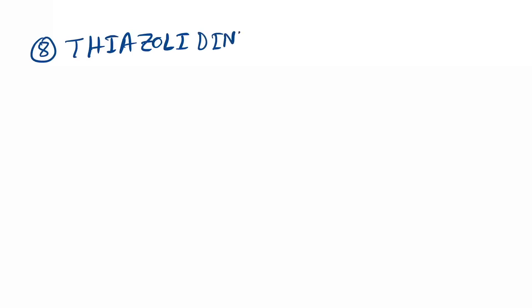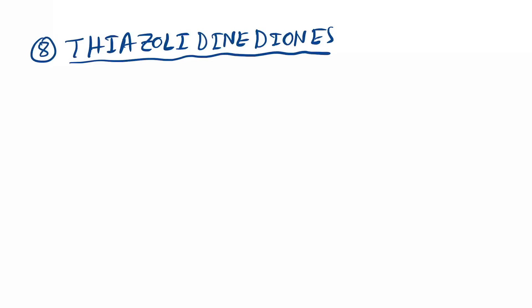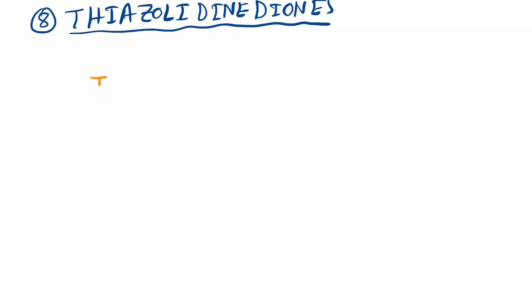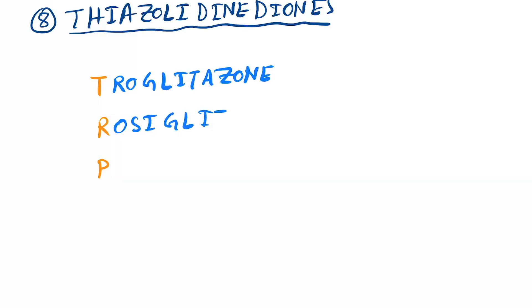Number eight is thiazolidinediones. For the drugs, you can remember the mnemonic T-R-P, like the TRP of every TV show: T for pioglitazone, R for rosiglitazone, and P for pioglitazone.